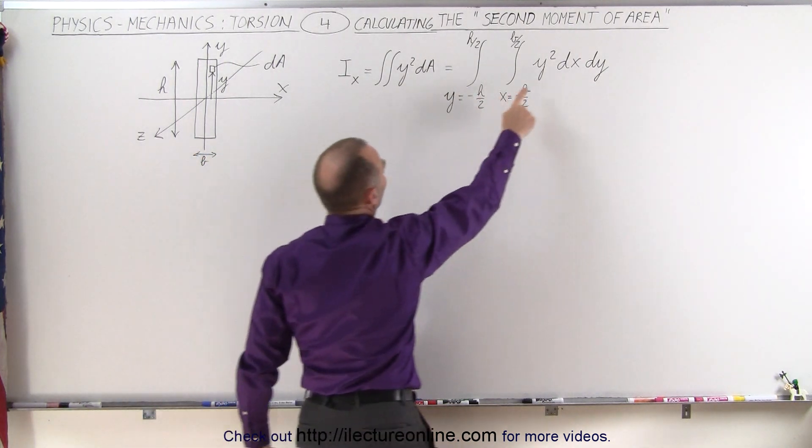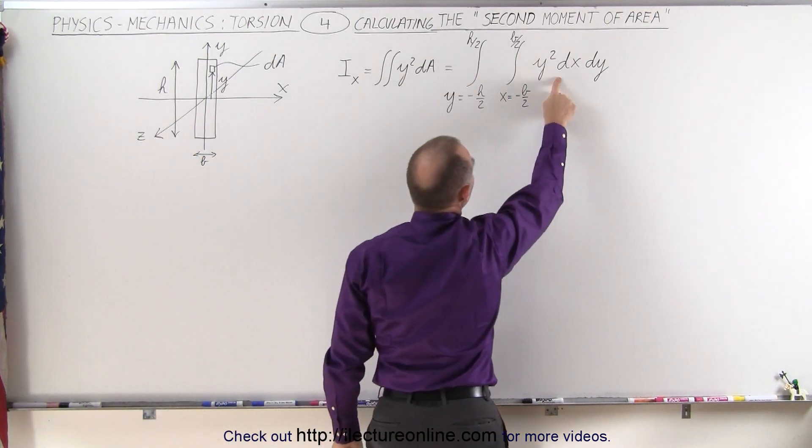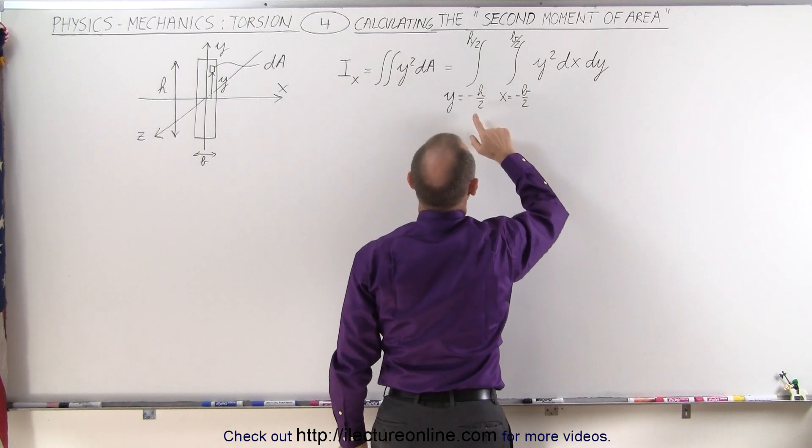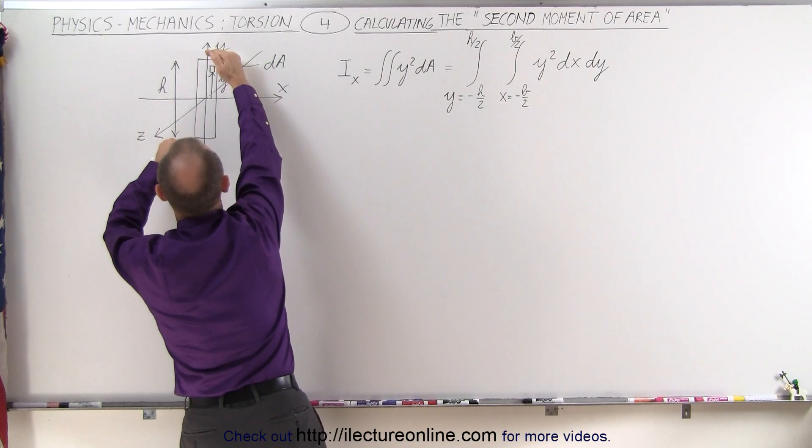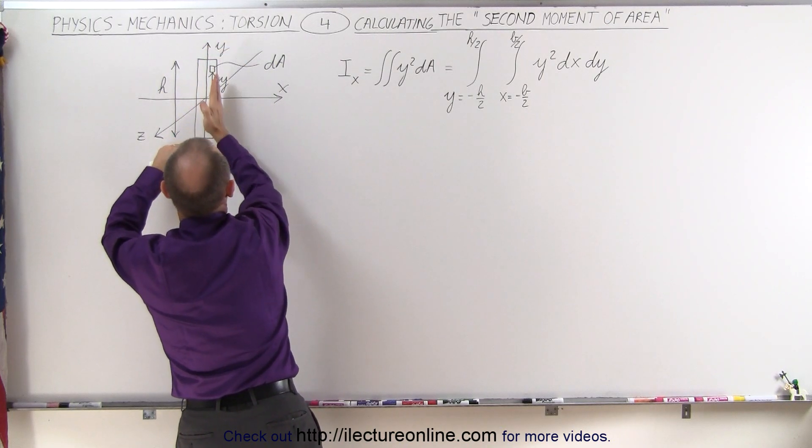Of course, we still have our y-squared here, and dA will simply be dx times dy. Notice the limits of integration go from minus h over 2 to plus h over 2, and from minus b over 2 to plus b over 2.